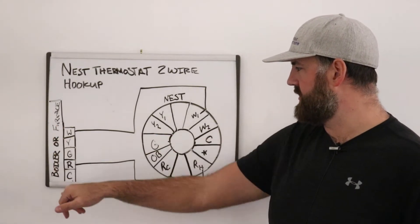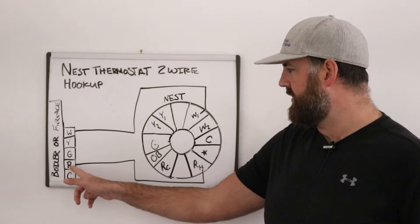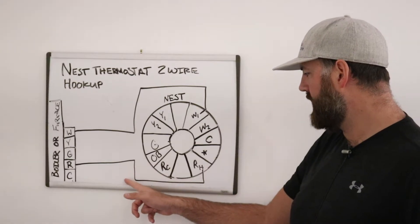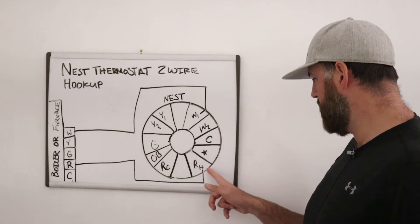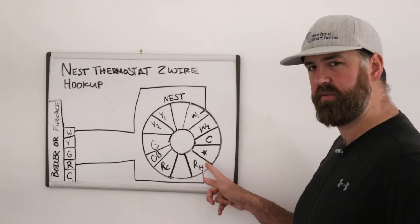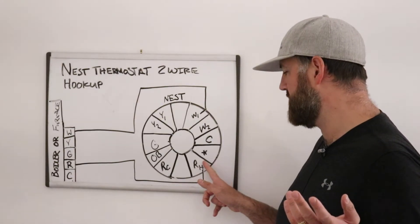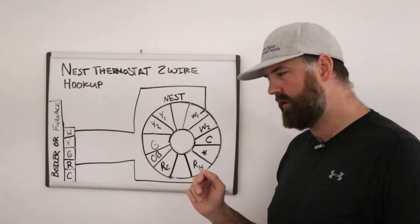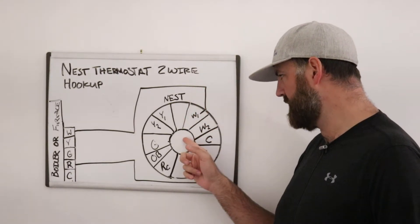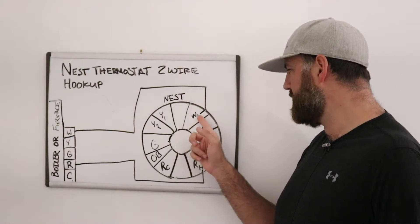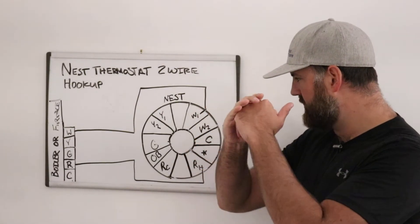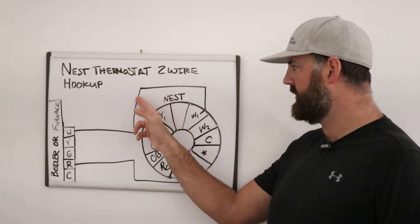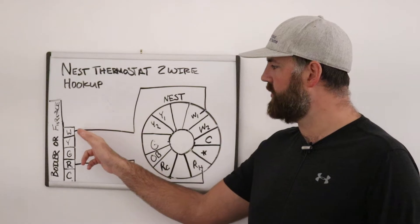And how a boiler or furnace works is that this R terminal is the power terminal and it will go in a wire to your thermostat, whether it was your existing thermostat or your nest thermostat. And then it will go through the nest and the nest is calling for heat. So it's turned up to 90 degrees or whatever temperature it's turned up to. And then that power goes back down through the W1, closes the internal circuitry or switch, power comes back down the W1, goes down the W1 wire, goes to the W1 terminal.